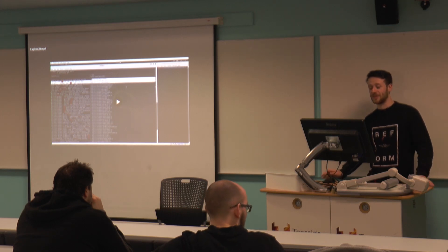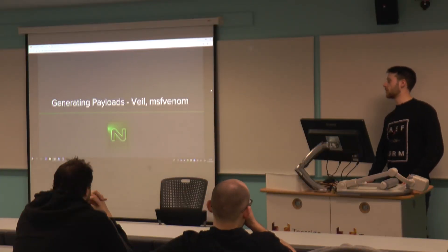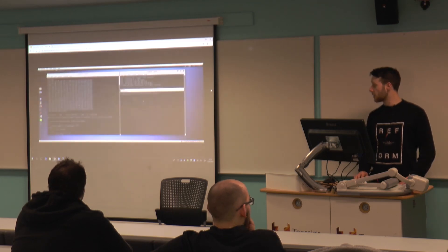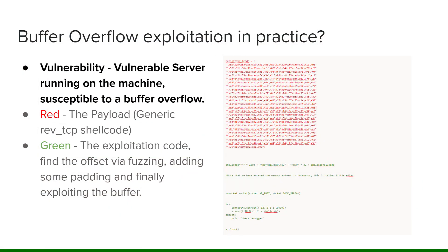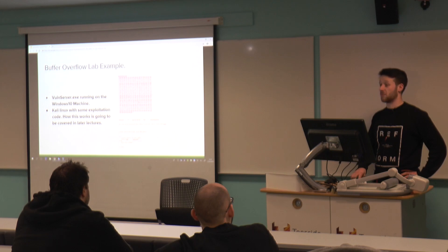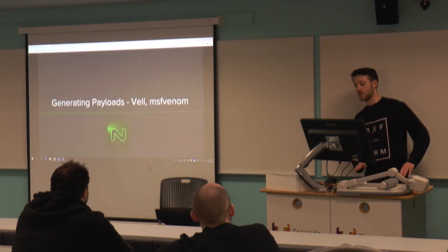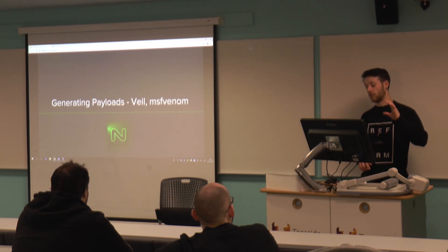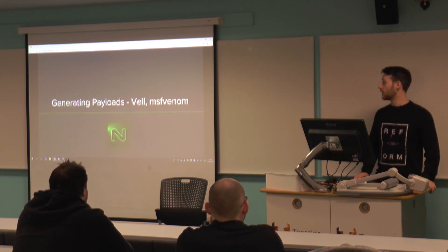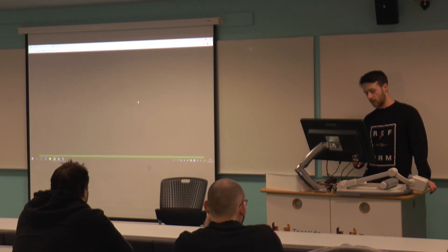Now we're moving into generating payloads — the shellcode part, which is that red section we saw in the buffer overflow. Exploit Database code may come with its own payload, but often you need to generate your own. You can also add custom exploits into Metasploit using template files. We'll be using Veil and MSF Venom. The buffer overflow payload was generated with MSF Venom and dropped into the Python script.